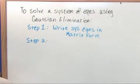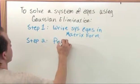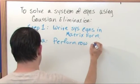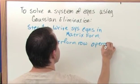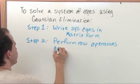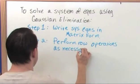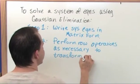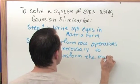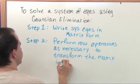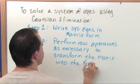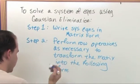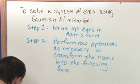Step two: Perform row operations as necessary to transform the matrix into the following form. And don't freak out too much about the following form because I've actually already showed you this form. I just didn't tell you. So I pulled a fast one on you.